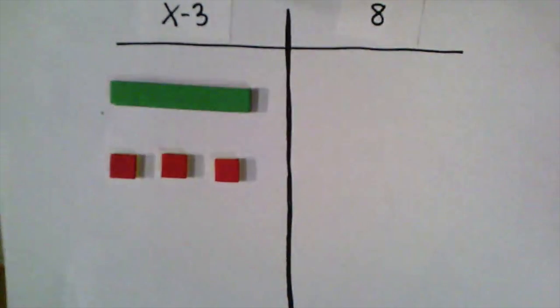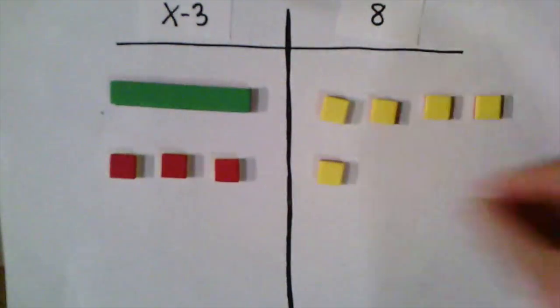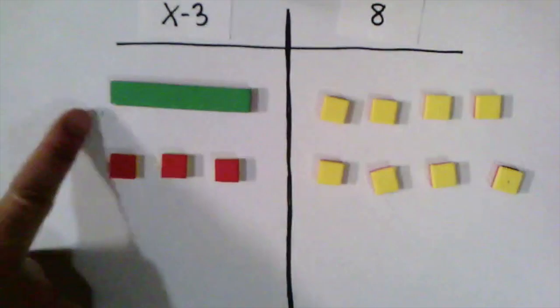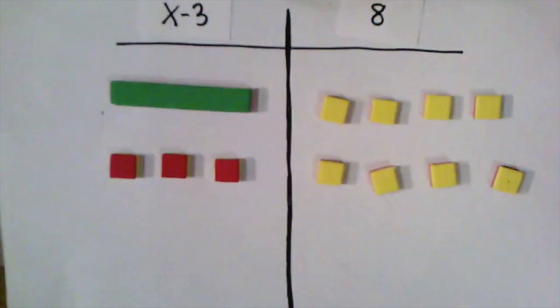Now on the right side, I need to have a positive 8. So now I've set up the equation x minus 3 equals 8. And again, when we're solving equations, our goal is to get the variable on a side by itself. So right now, where I have an x, I also have a negative 3. So I can use that idea of zero pairs to cancel out the negative 3 and just be left at the value of x.